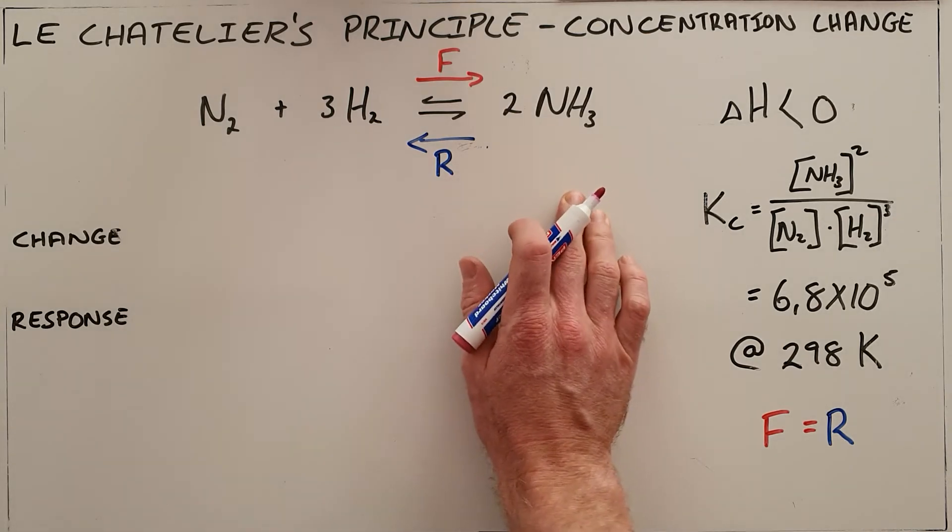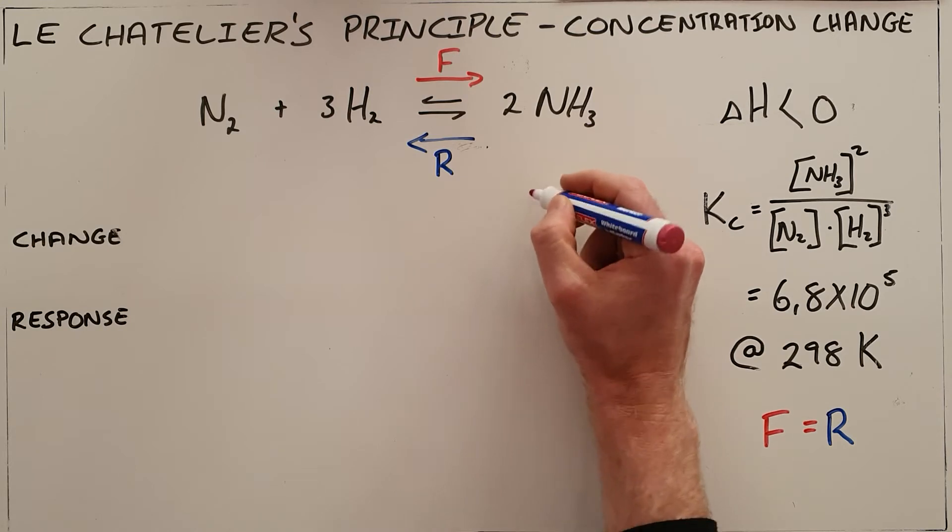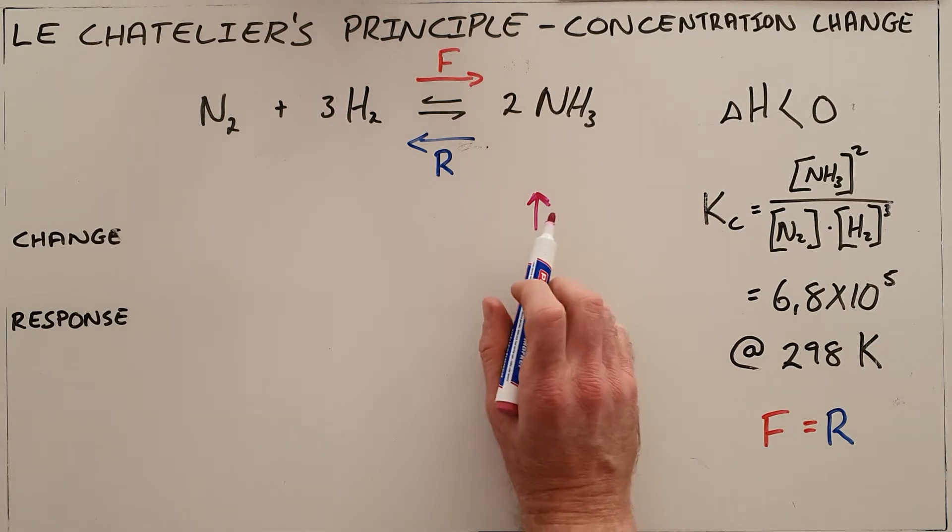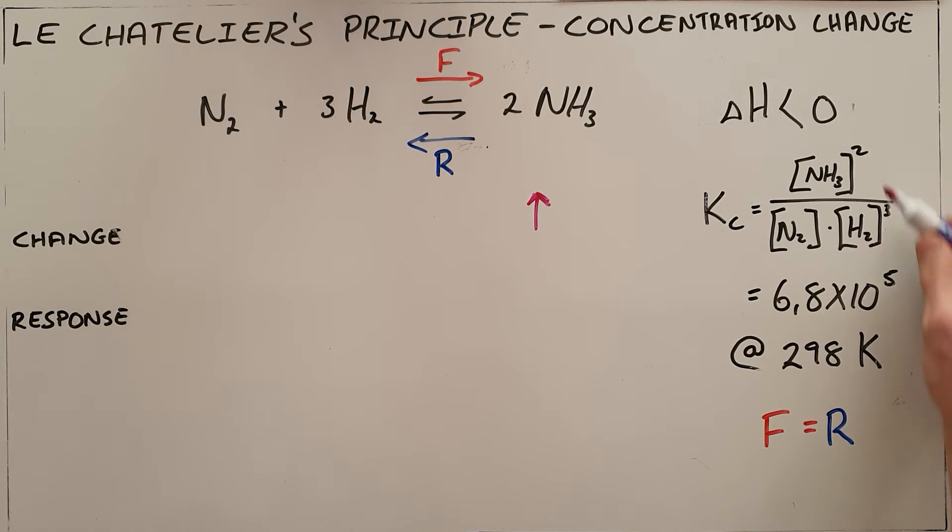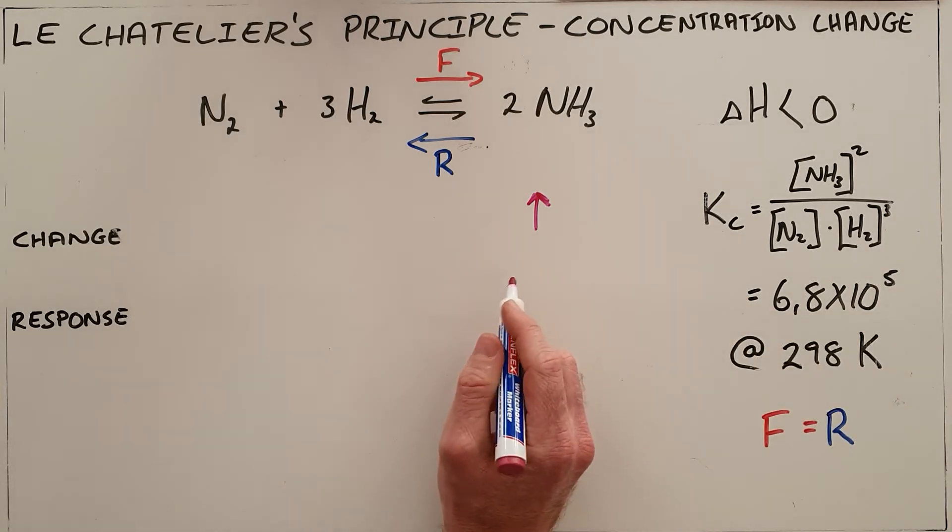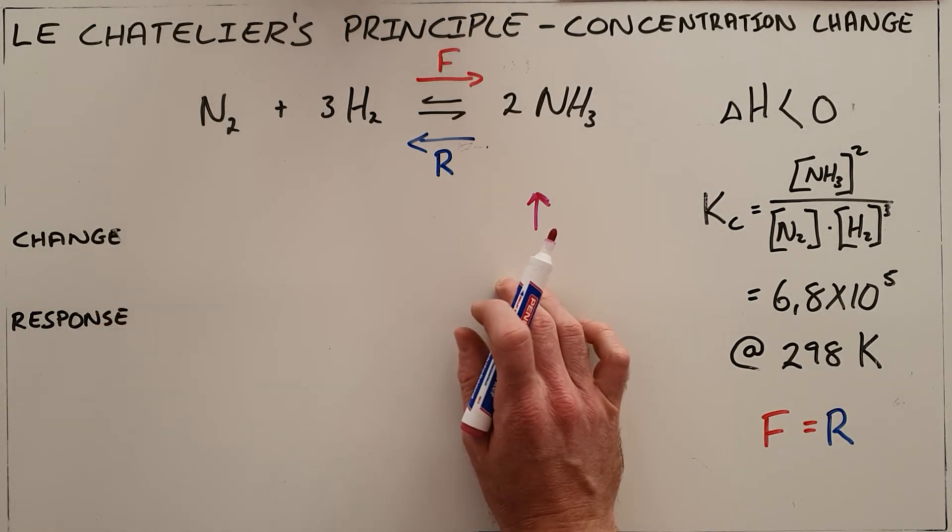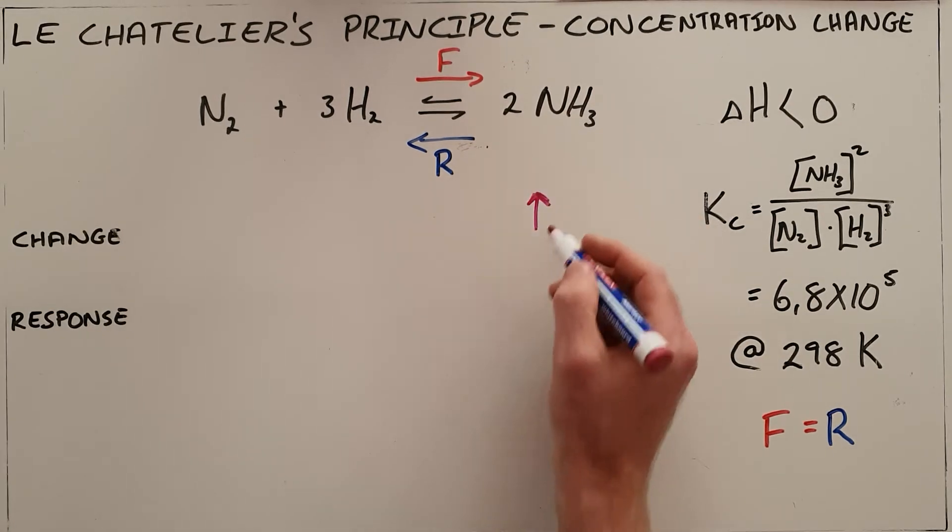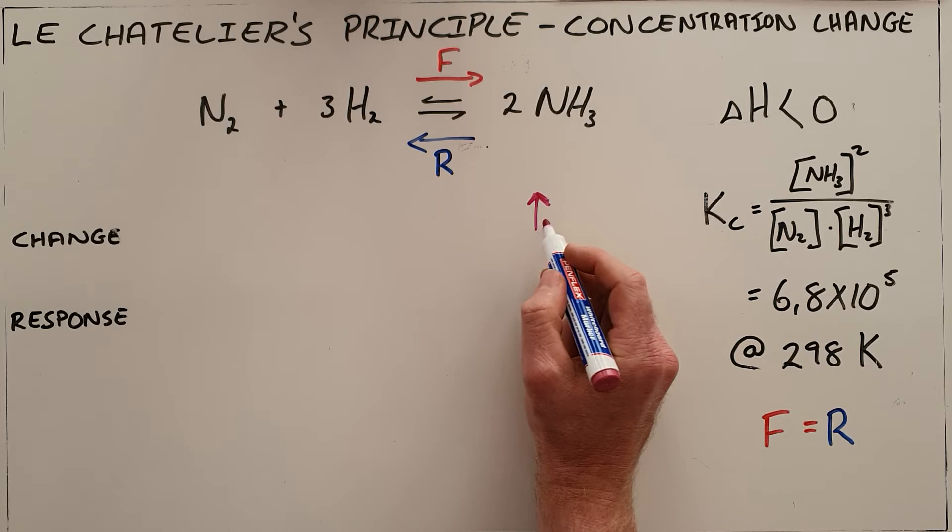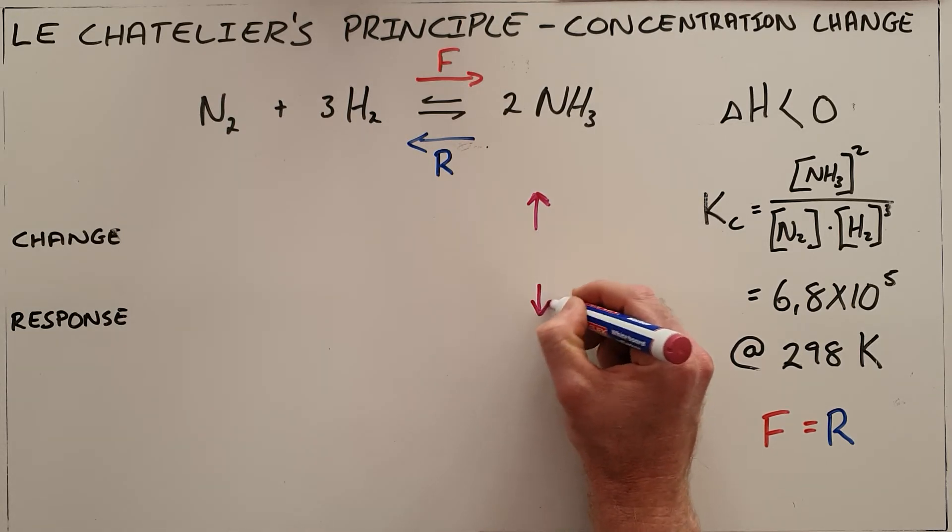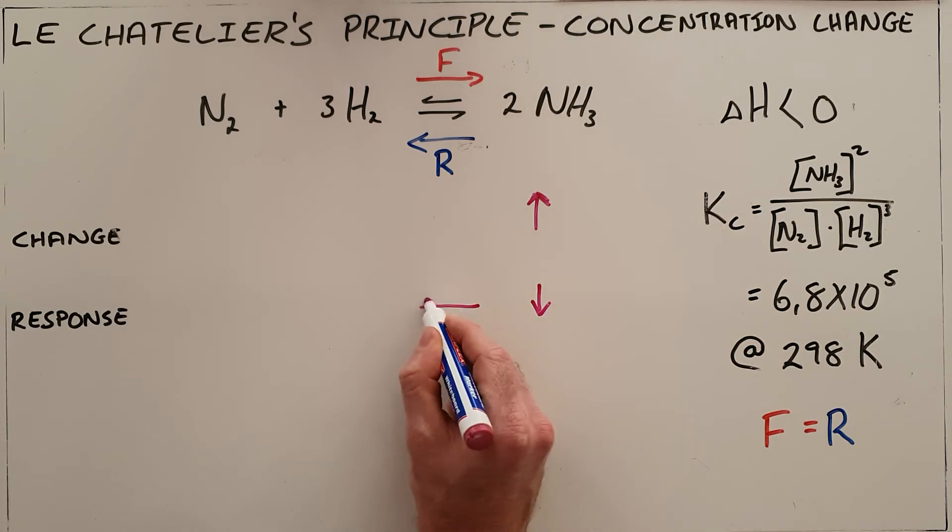In this reaction, once it's at equilibrium, if we suddenly increase the amount of ammonia by adding ammonia to this reaction, we have now upset equilibrium because we've thrown this ratio out of balance. The reaction tries to undo that by decreasing what I have increased. I have added ammonia, so the reaction's response is to decrease the amount of ammonia by favoring the reverse reaction.